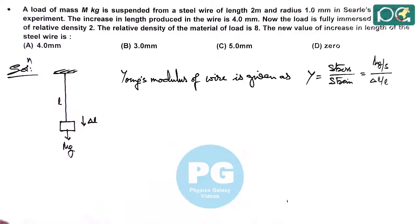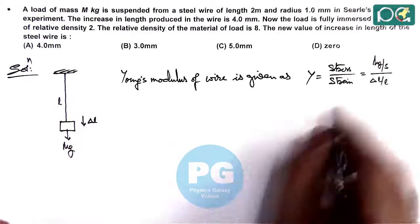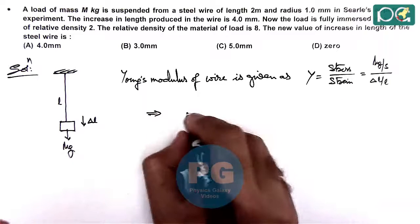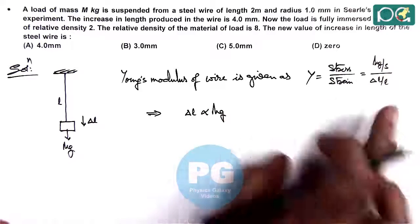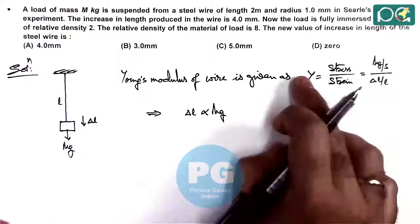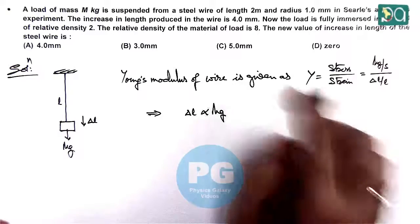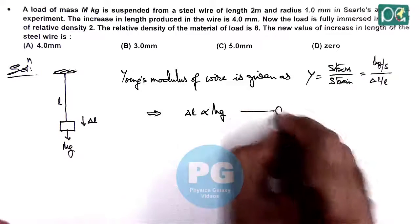If L is the initial length of wire, we can see the extension in length delta L is proportional to the weight mg, because cross sectional area, Young's modulus, and length are constant. So this is equation 1.